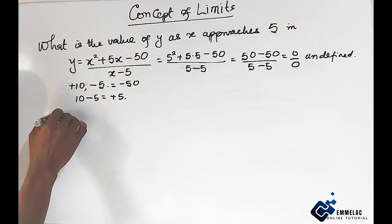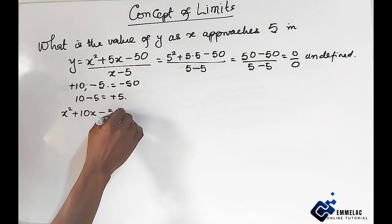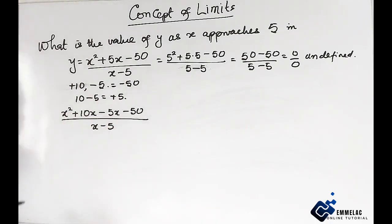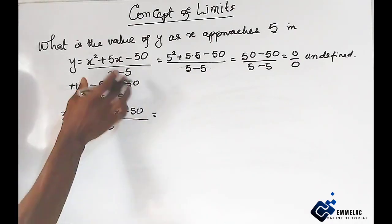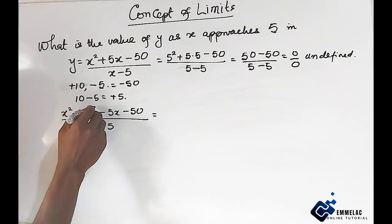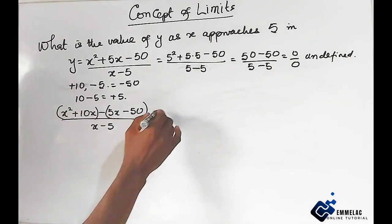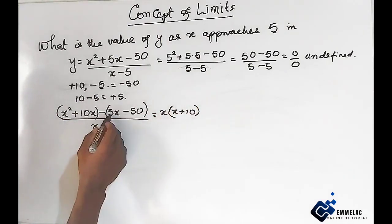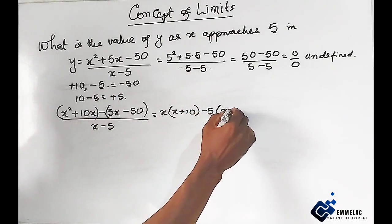What we need to do now is write x raised to the power of 2 plus 10x minus 5x minus 50, all over x minus 5. You don't plug in 5 until you reduce it to the smallest form. Let us factorize: the common factor in the first two terms is x, giving x into x plus 10. The common factor between 5x and negative 50 is 5, giving x plus 10.